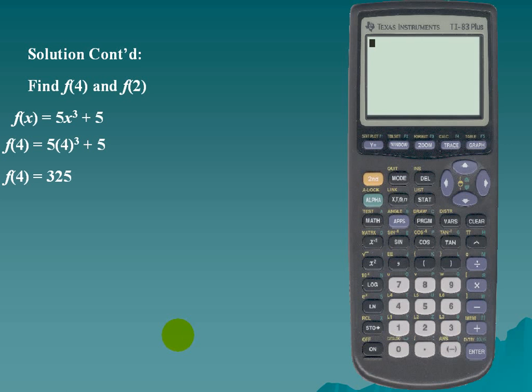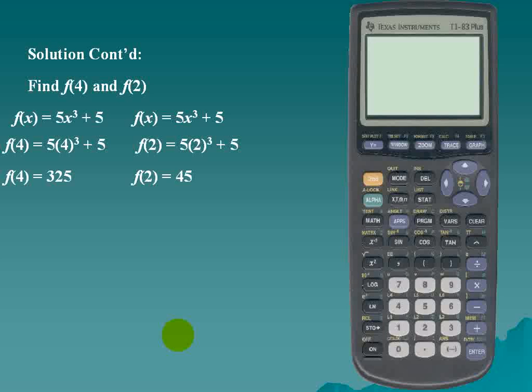In order to find f(2), again we would take our f(x) formula, substitute x for 2, and f(2) is 45.